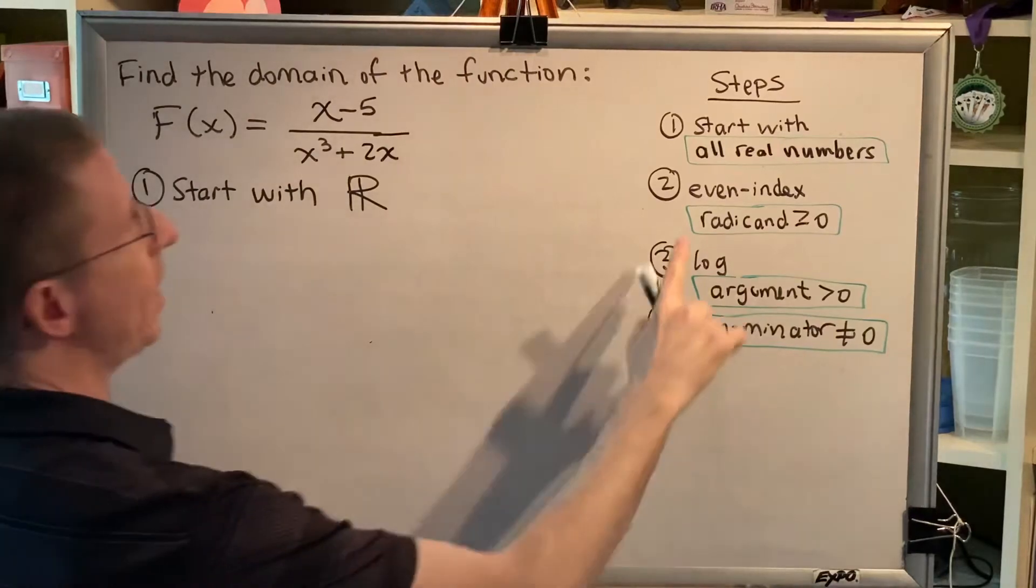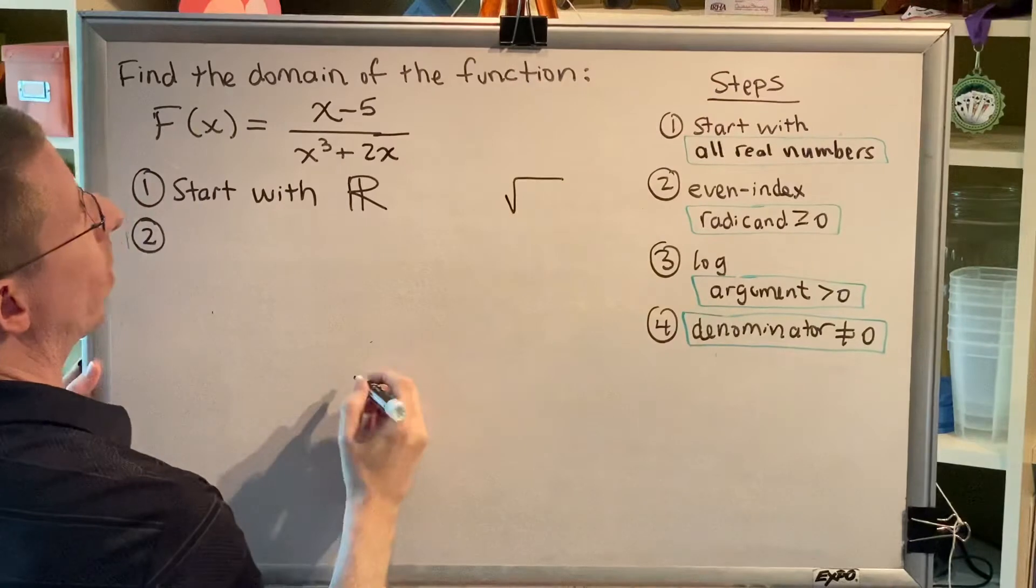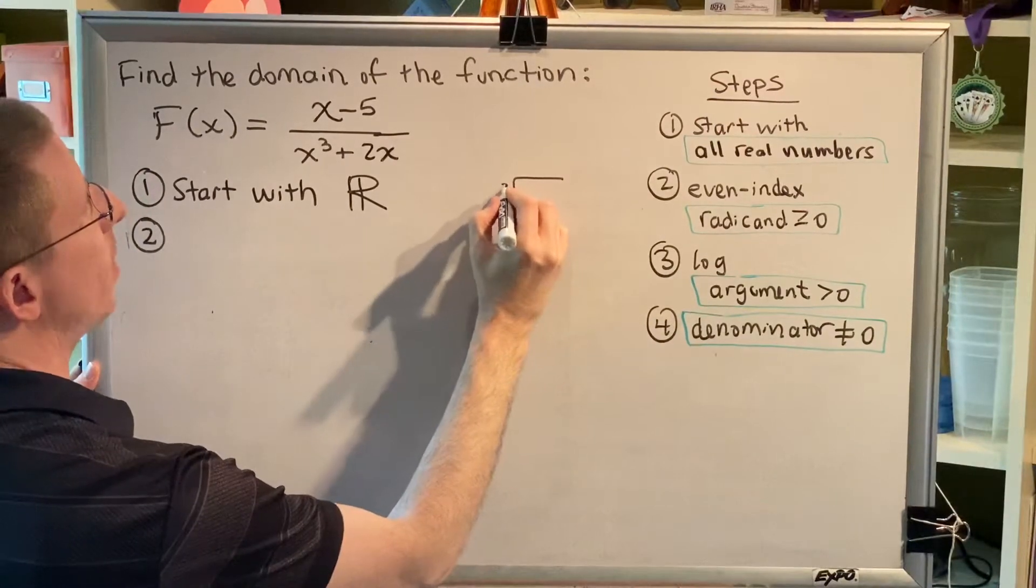Step 2, we look for any even index radicals in our problem. Remember, an even index radical would look like this, and then there would be an even number here, like a 2 or a 4 or a 6.